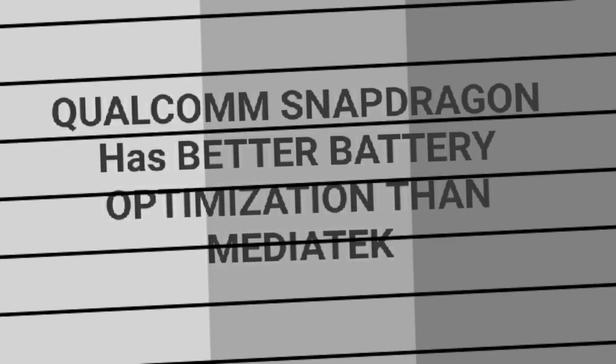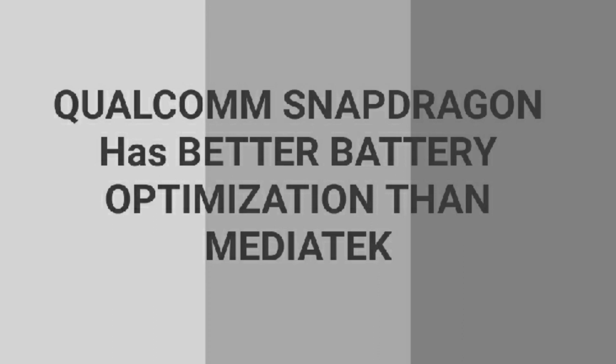The Qualcomm Snapdragon has better battery optimization than MediaTek. That's why we will notice that devices running with the Qualcomm Snapdragon have a smaller battery capacity because of its better battery optimization. Meanwhile, devices that run with MediaTek have a higher and bigger battery because they consume more power compared to Snapdragon.